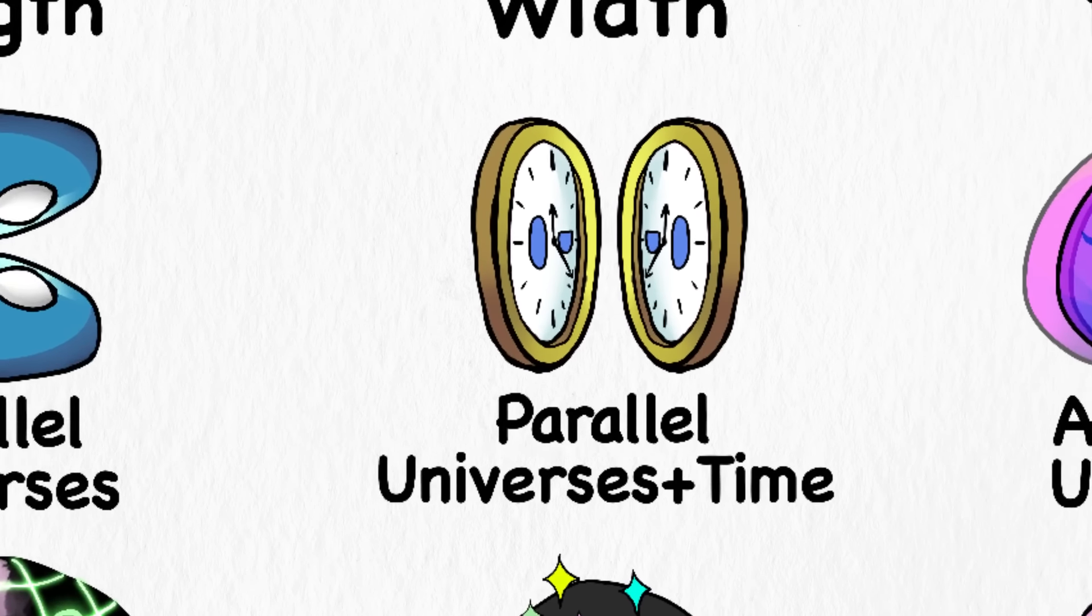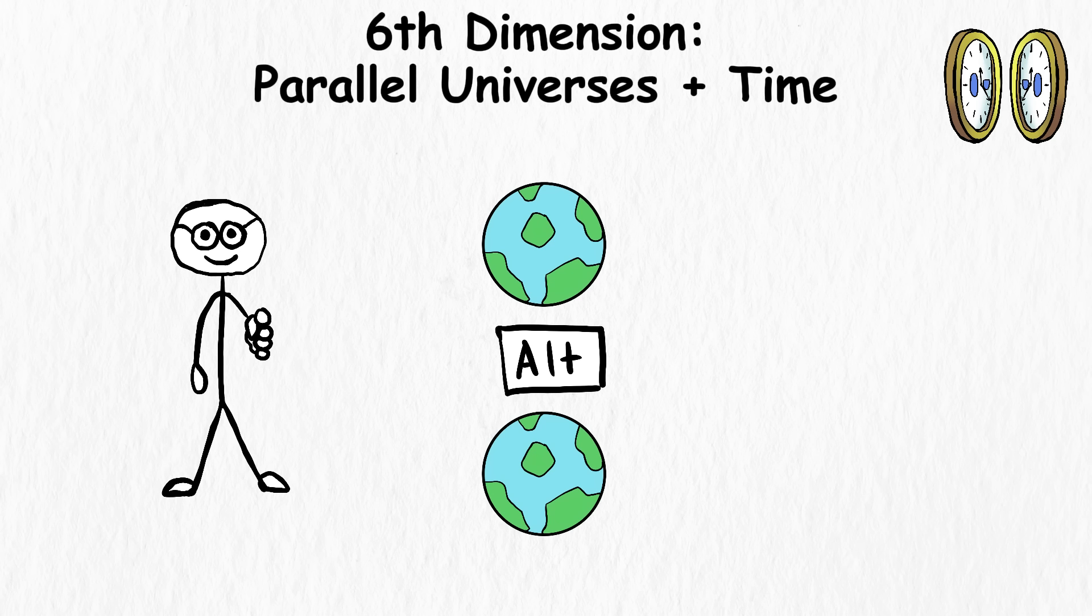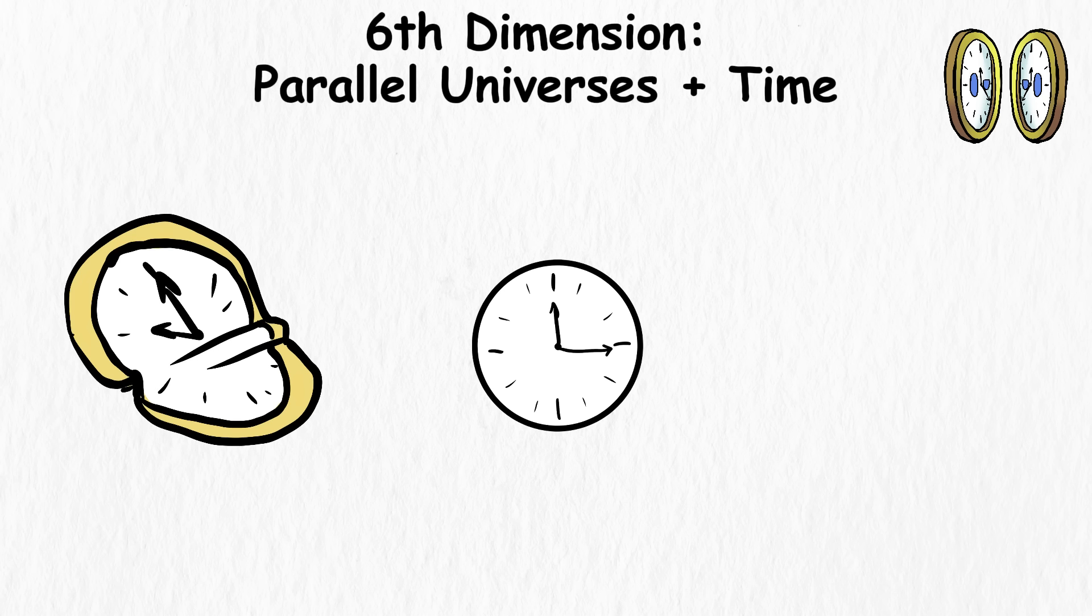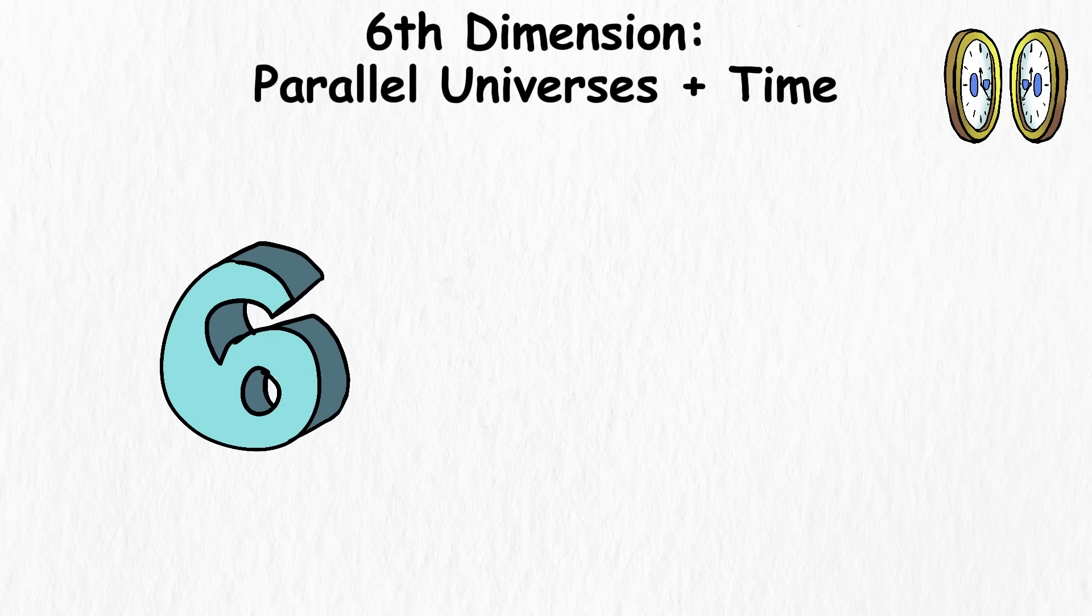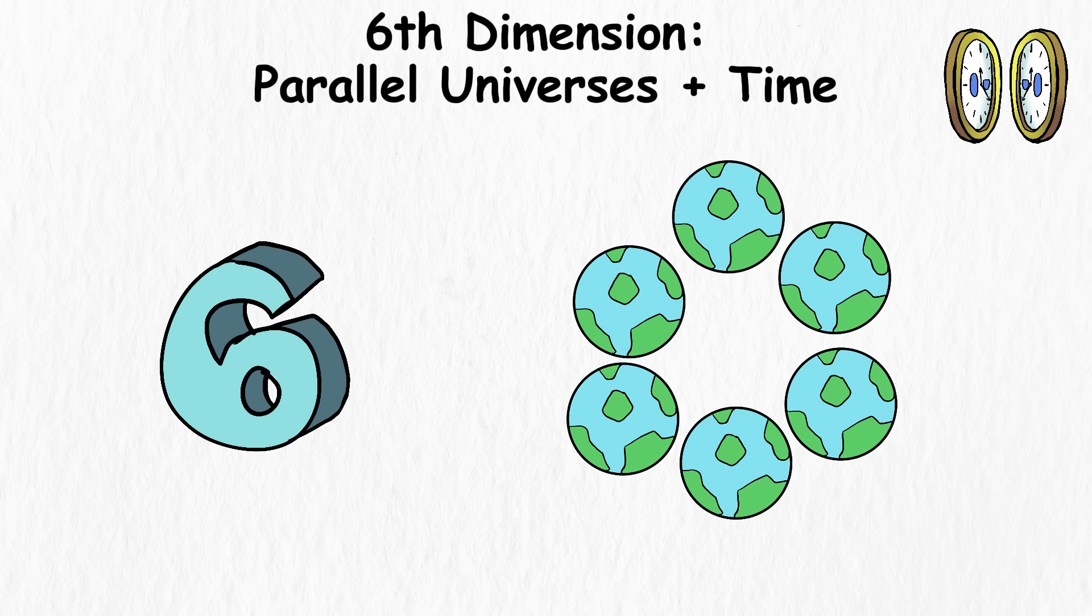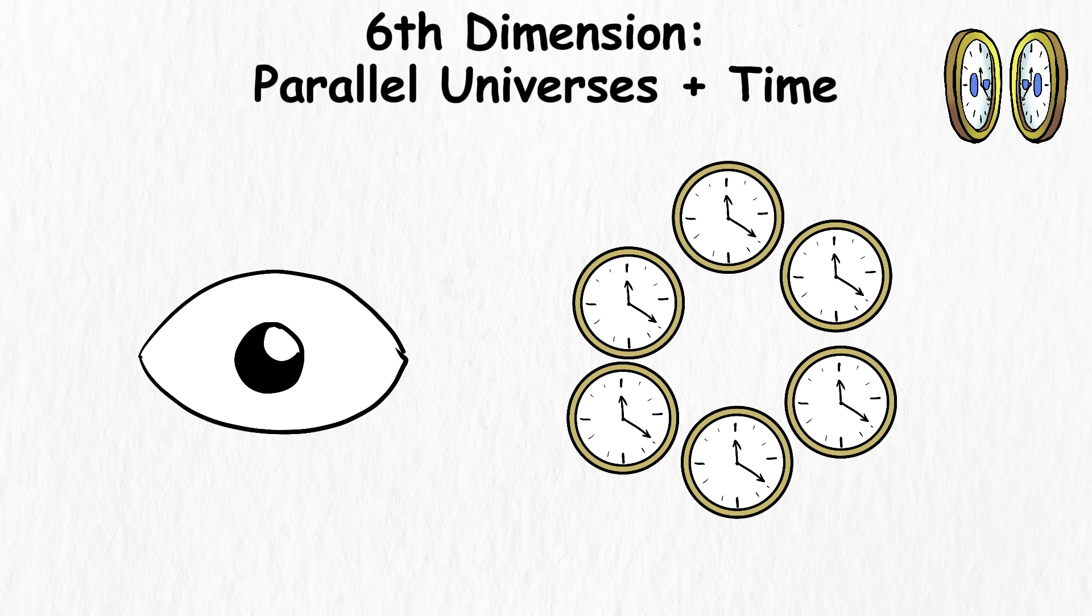Sixth dimension. Parallel universes plus time. You're probably already aware of how parallel universes work. These are alternate realities that exist alongside our own, but have a different set of events. But the element of time also adds a wrinkle to this discussion, allowing the theoretical sixth dimension to exist. In the sixth dimension, the concept of time connects the different parallel realities. These parallel universes still exist differently from one another, but time changes that concept, because you can now simultaneously see every possible parallel reality.